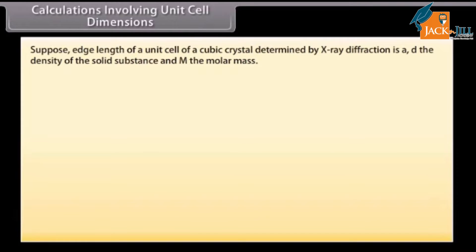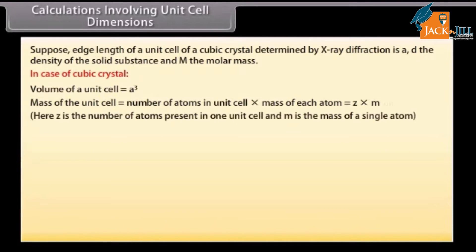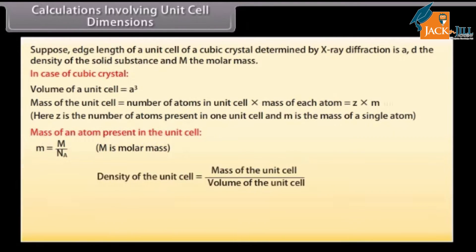Suppose the edge length of a unit cell of a cubic crystal determined by X-ray diffraction is A, D is the density of the solid substance, and M is the molar mass. In the case of a cubic crystal, the volume of a unit cell is equal to A³. The mass of the unit cell is equal to the number of atoms in the unit cell multiplied by the mass of each atom, which equals Z into M, where Z is the number of atoms present in one unit cell and M is the mass of a single atom.